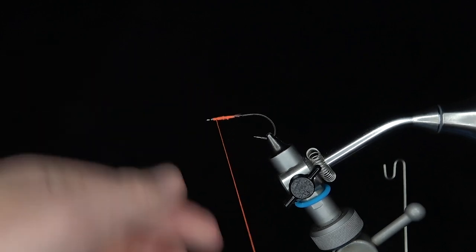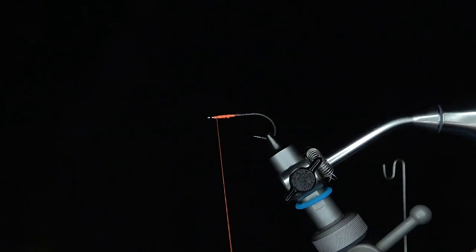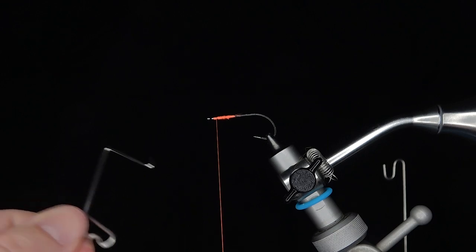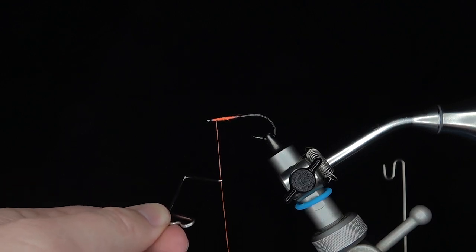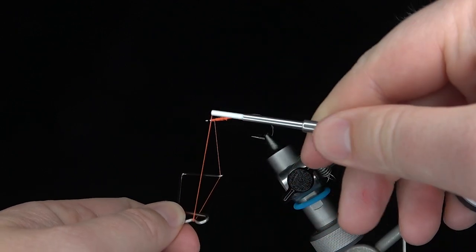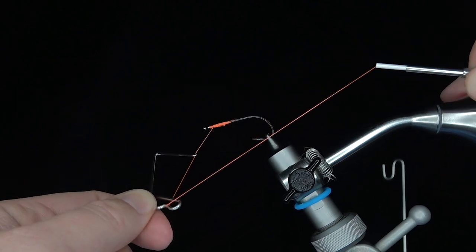I'll show you guys one more time. Bobbin in my right hand, whip finisher in my left hand. I'm going to pinch at the top so it doesn't rotate, hook the thread, pull up through that groove with the bobbin, and rest my bobbin over here on the right.